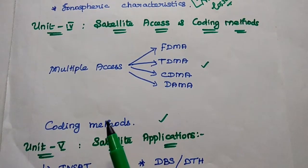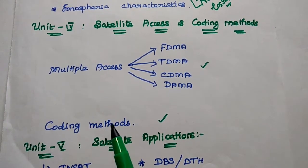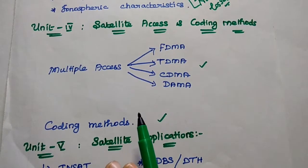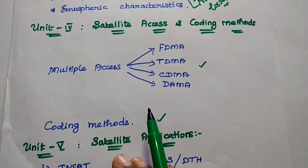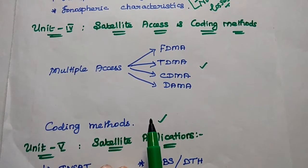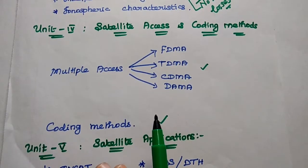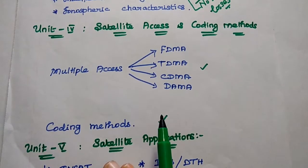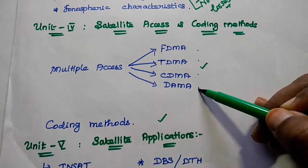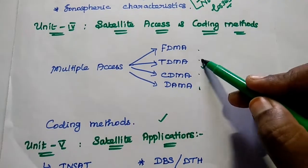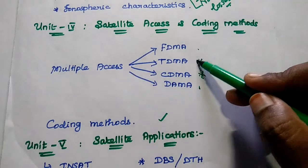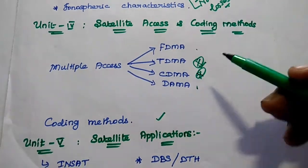We should also concentrate on coding methods. Different types of coding methods are available for satellite communication, such as linear convolution codes, cyclic codes, turbo codes, and LDPC codes. You have to concentrate on all four topics. TDMA and CDMA are the two most important ones.